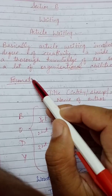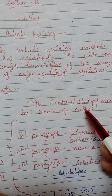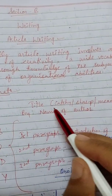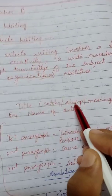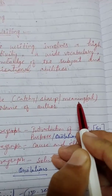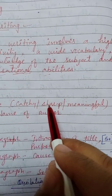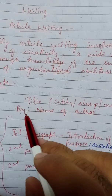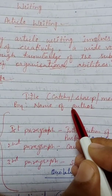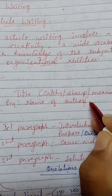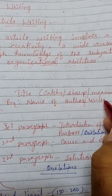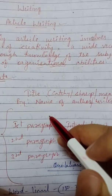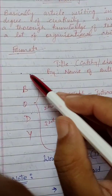Now the format. First of all, the very first thing is the title. The title should be catchy, sharp in understanding, and meaningful. After that comes the byline, in which the writer writes his or her name — that is, the name of the author or writer. So the first two things are title and byline.